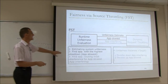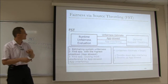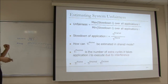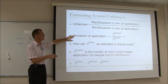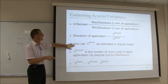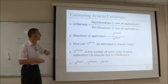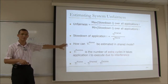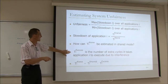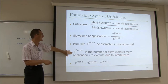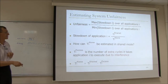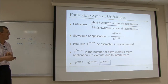The key question is how to figure out the application with the highest slowdown. Unfairness is maximum slowdown over all applications divided by minimum slowdown. The slowdown of an application is time taken when sharing resources divided by time taken when run alone. The key question always is: how do you estimate T_alone in shared mode? We take an approach similar to stall time for memory scheduling. T_excess is the number of extra cycles it takes an application to execute due to interference, and T_alone equals T_shared minus T_excess.